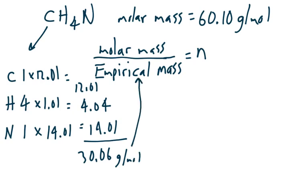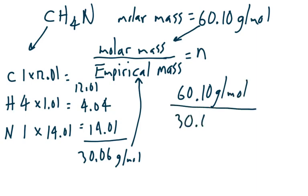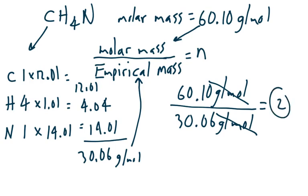That empirical mass goes in the denominator. So we have the numerator — the molar mass of the compound from the question — divided by the empirical mass we just found. It's a unitless ratio. It happens to be 2, coincidentally like the previous problem; it could also be 3, 4, or even 1. If you get a 1, that just means the empirical and molecular formula are the same — you did nothing wrong.